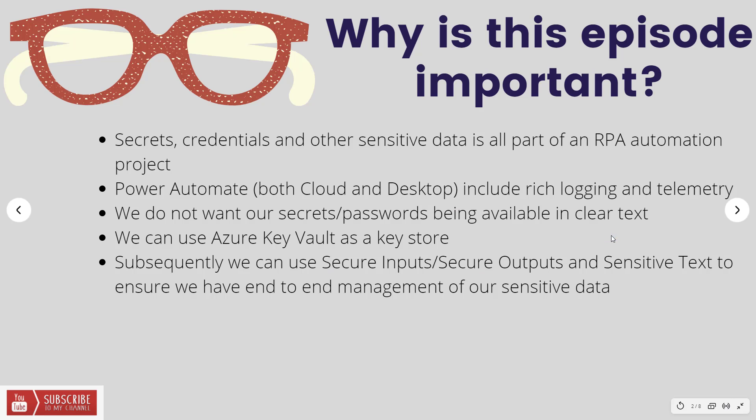Let's talk about why this is important. Whenever you have RPA solutions you're going to run into legacy apps or applications that don't have integrated authentication like Windows authentication. As a result you need to provide credentials — a username, a password, or a secret for an API call. How can we manage this data and prevent it from showing up in our logs? Both cloud flows and desktop flows have rich logging capabilities and we don't want passwords showing up, especially if an operations team shouldn't have access to that information but sees it while managing the app.